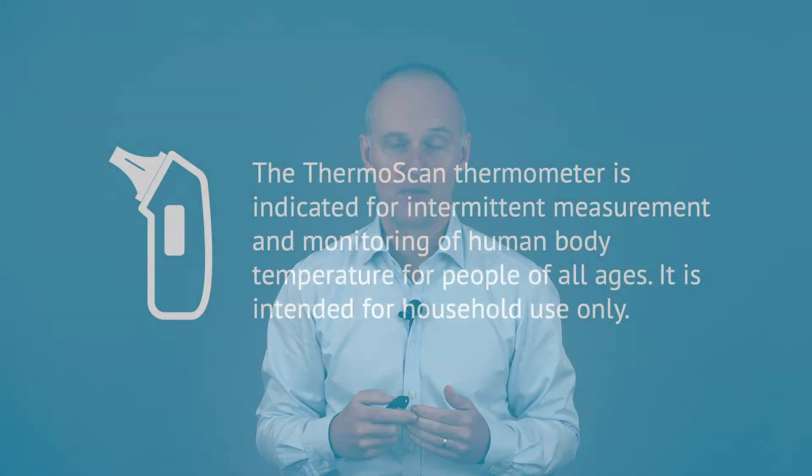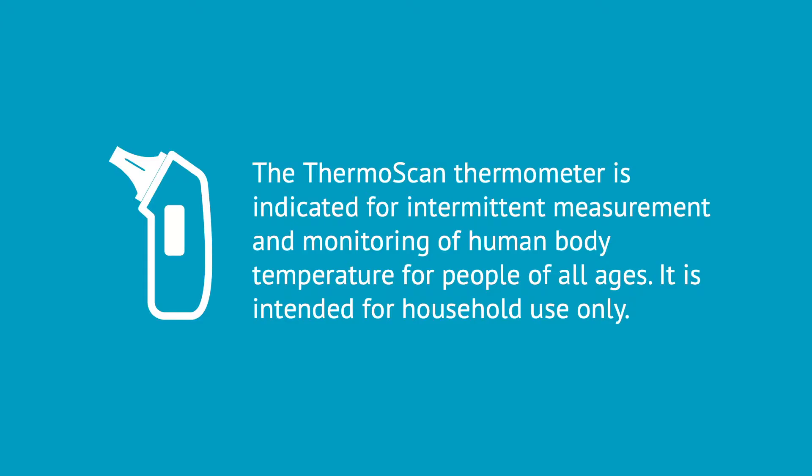The first term I will bring up is intended use. It is a good starting point because the intended use or intended purpose is something you should have defined quite early in your projects. Here is an example for a thermometer: the ThermoScan thermometer is indicated for intermittent measurement and monitoring of human body temperature for people of all ages. It is intended for household use only.